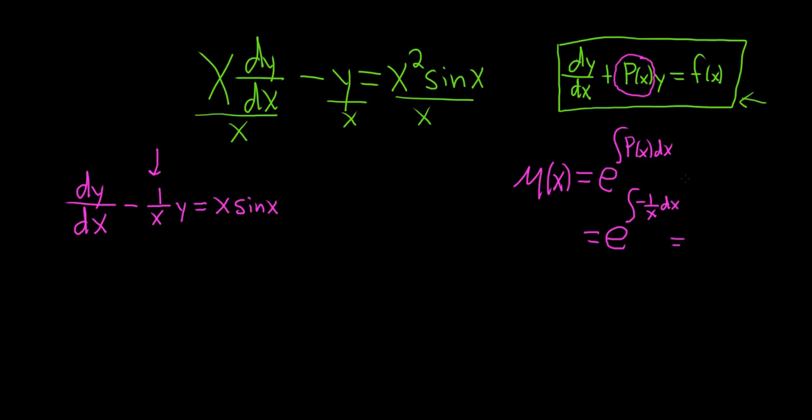When we integrate 1 over x, we get the natural log of the absolute value of x. So this is e to the negative natural log absolute value of x.